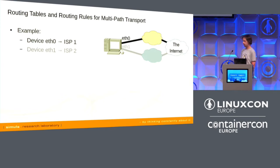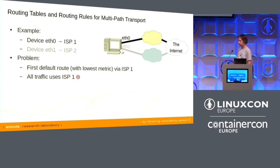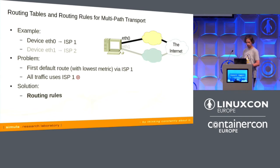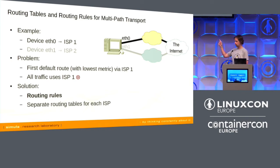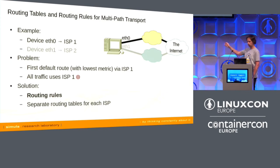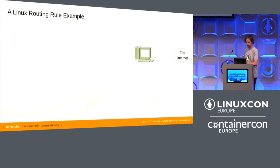When you have a computer connected to the internet via one Ethernet interface and add a second ISP on a second Ethernet interface, it won't work straightforwardly. If you set a default route via the first ISP over ETH0, all traffic goes over ETH0, not ETH1. Fortunately, Linux has all the features necessary to solve this issue easily using routing rules — a selector that chooses which interface to use for a packet based on the source IP address.